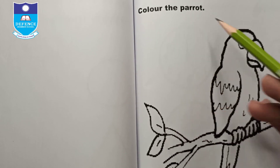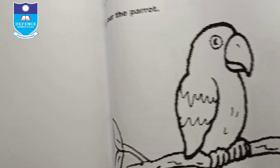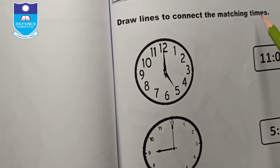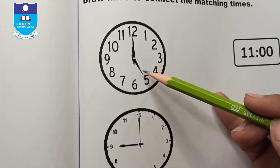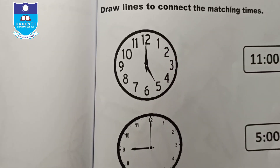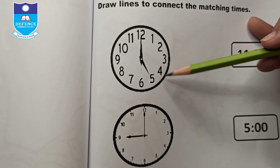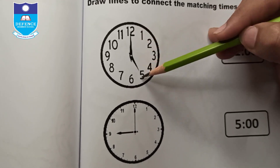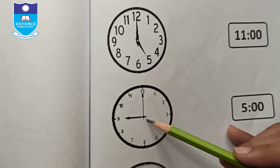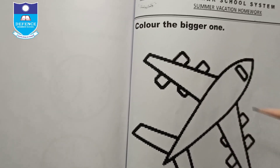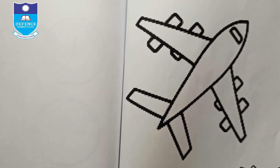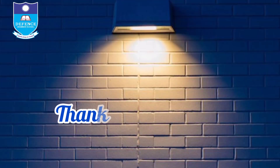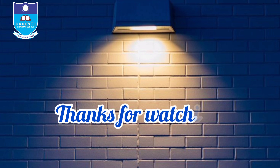Color the parrot. Draw lines to connect the matching times — some clocks are shown with different times. For example, if the first clock shows 5 o'clock, match it with 5 o'clock in the second column. Color the bigger one — two aeroplanes are shown; color the bigger one.